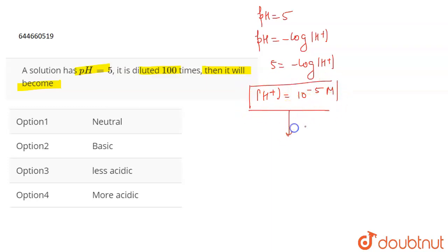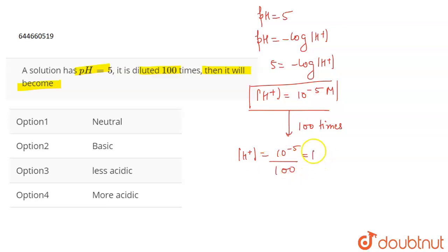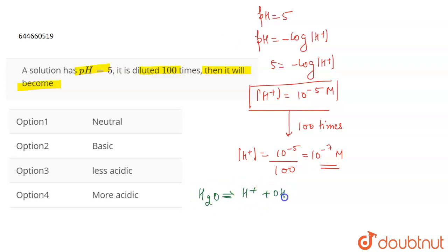Now it is diluted 100 times, so the concentration of H⁺ becomes 10⁻⁵ divided by 100, which is equal to 10⁻⁷ molar, because it is diluted 100 times.